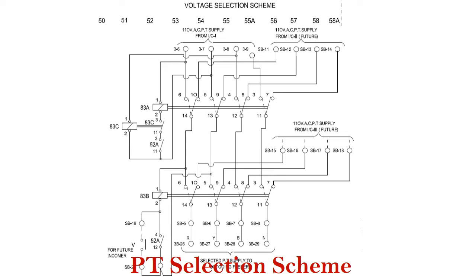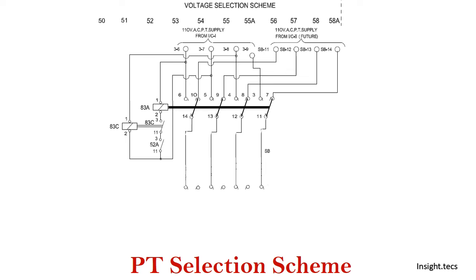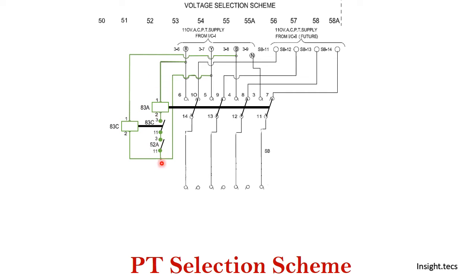Now let us understand this scheme and how it works. For R, Y, and B phase — between B phase and Y phase, a connection is given to contactor coil 83C. So for B phase and Y phase, the connection energizes contactor 83C. Its coil will be energized when there is presence of these two phases. There is another provision for 83A coil, which is connected between R phase and Y phase.